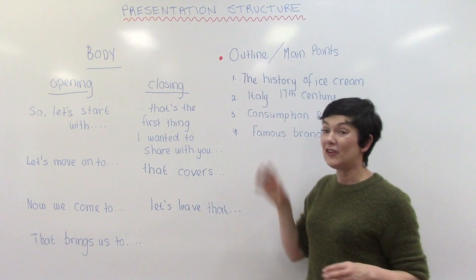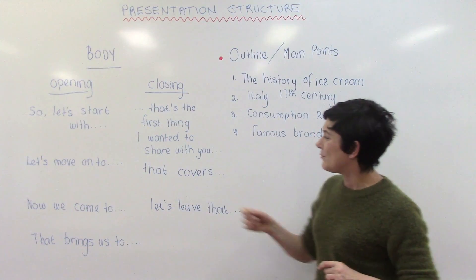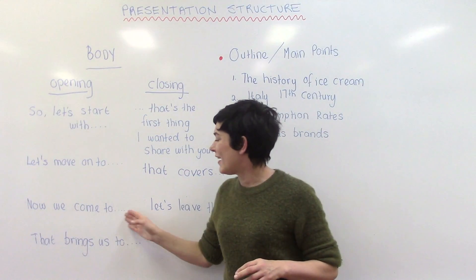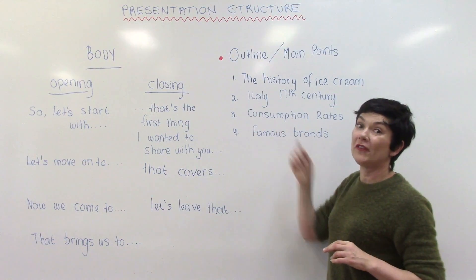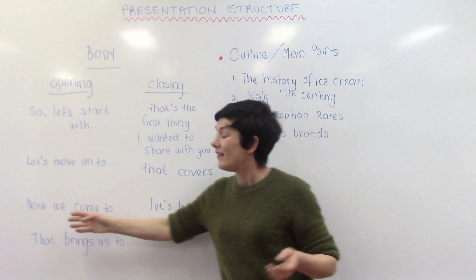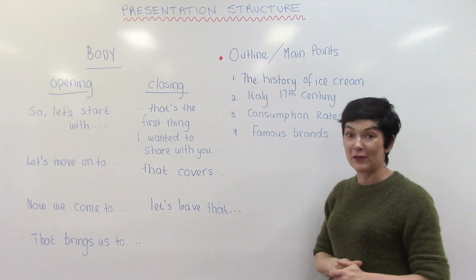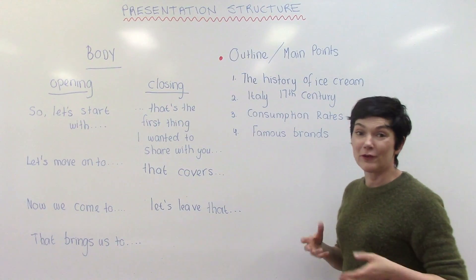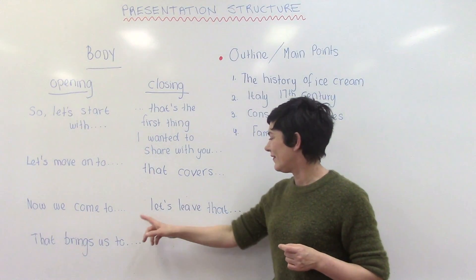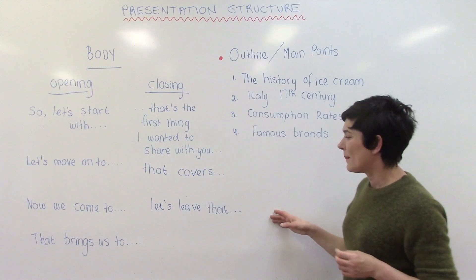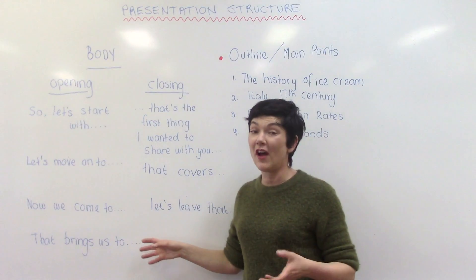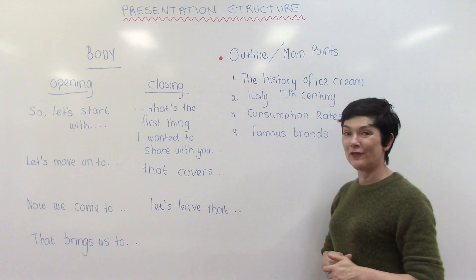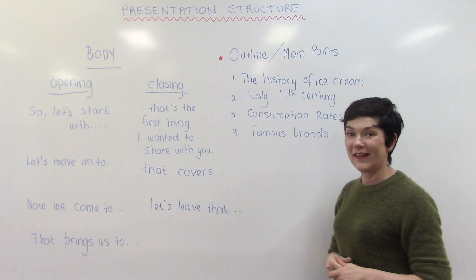After discussing your second subtopic with details and examples, close it by saying: 'So that covers Italy in the 17th century. Now we come to consumption rates around the world — let's have a look at who's eating the most ice cream.' After covering that, close with: 'Let's leave that, and that brings us to the final section, which is famous brands.'